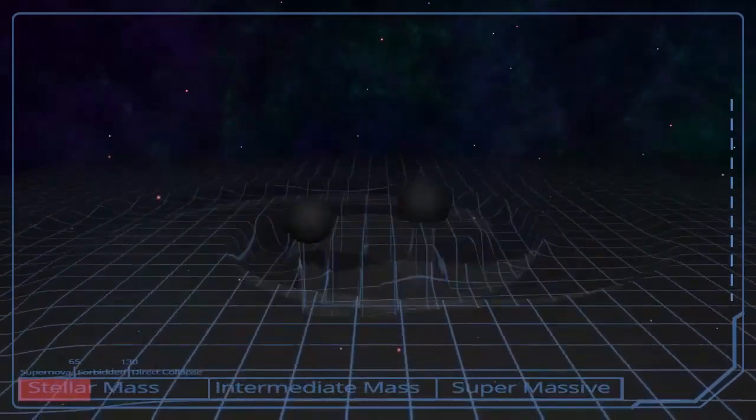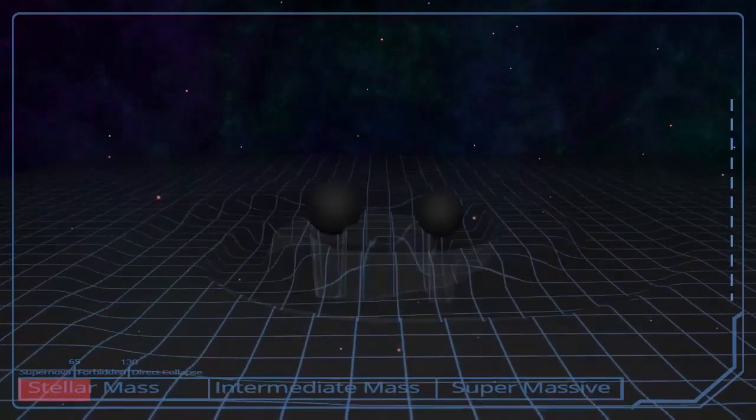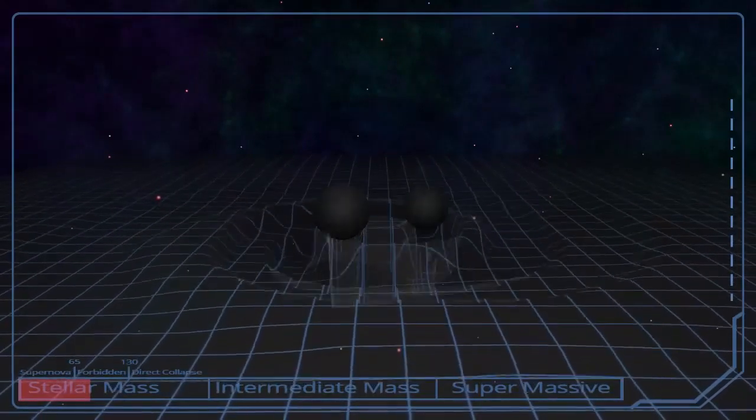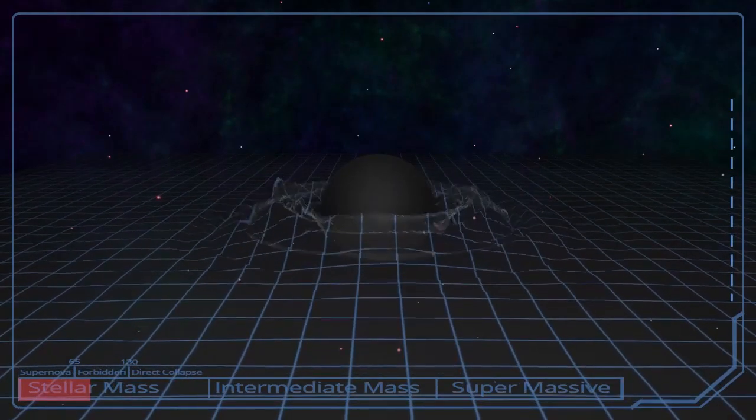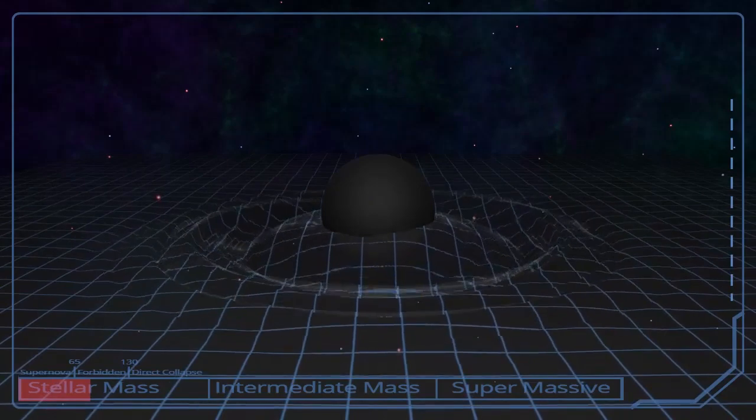In May 2019, LIGO discovered the most massive black hole merger ever observed. Two monster black holes collided to form an even more massive object, about 150 times as heavy as the Sun.